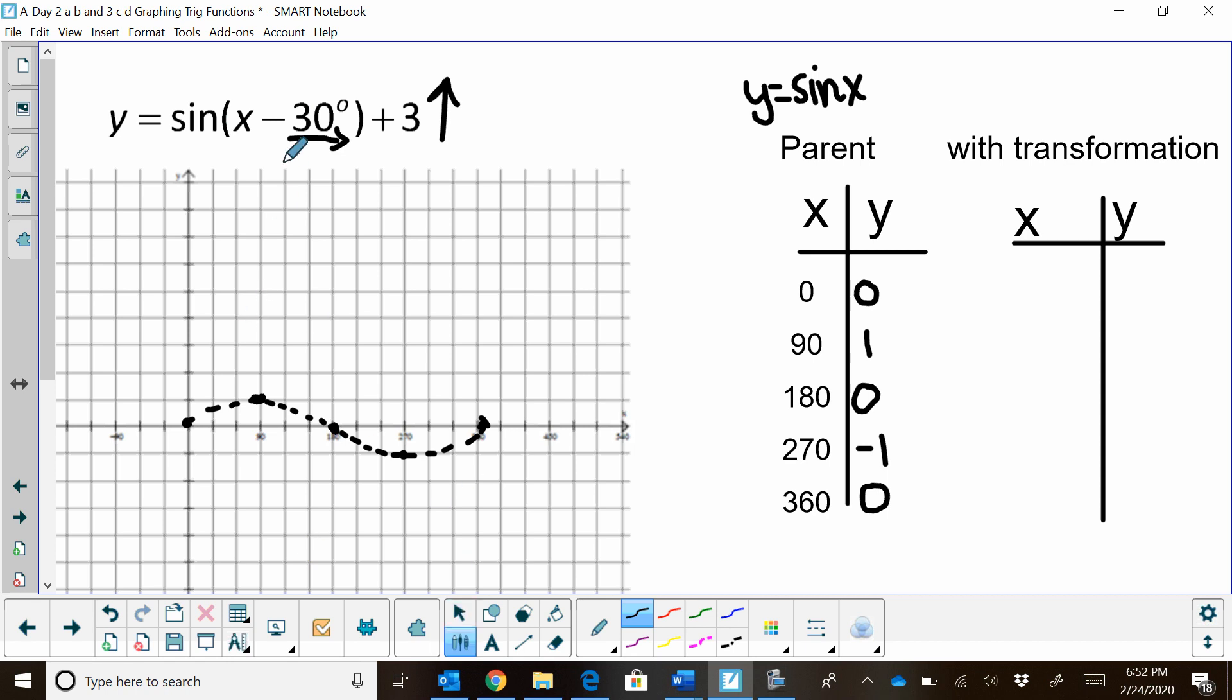Now we're going to take that curve and slide it right 30 degrees and up 3. So I'm going to take my table, my parent graph, and I'm going to apply the transformations in the table. So I'm moving to the right 30 degrees, so every x value I'm going to add 30 degrees, and every y value I'm going to add 3.